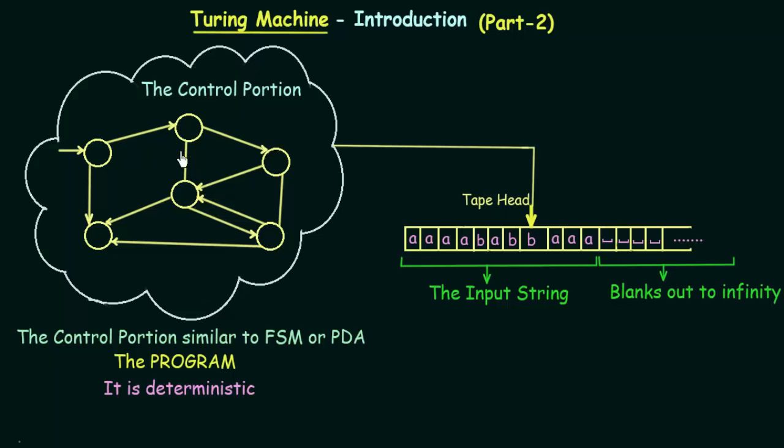This is the program or the control portion of your Turing Machine. One thing you need to remember is that it is deterministic. We already know what is the meaning of determinism and non-determinism from this lecture series. We will discuss later why it is deterministic, and we will show that non-determinism does not buy you any additional power in case of Turing Machine.